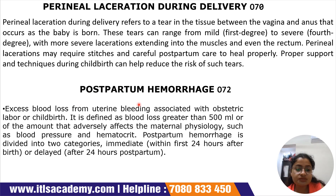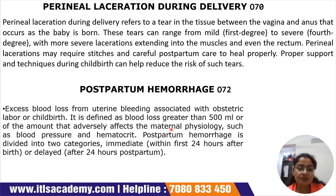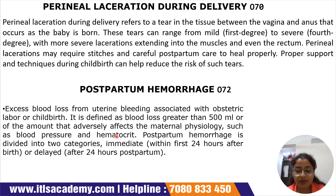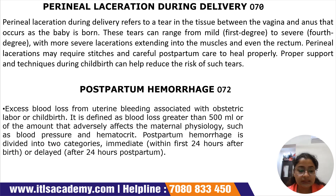Postpartum hemorrhage, subcode O72, is excess blood loss from uterine bleeding associated with obstetric labor or childbirth. It is defined as blood loss greater than 500 ml, or an amount that adversely affects maternal physiology such as blood pressure and hematocrit. Postpartum hemorrhage is divided into two categories: immediate, occurring within the first 24 hours of birth, and delayed, occurring after 24 hours postpartum.